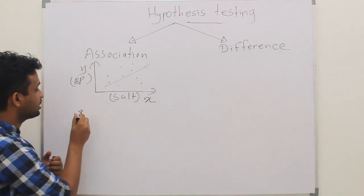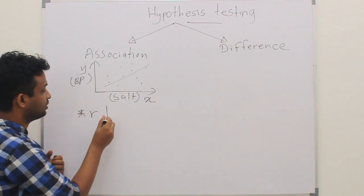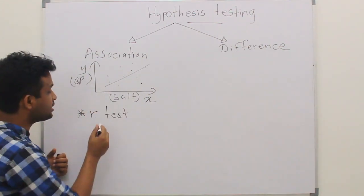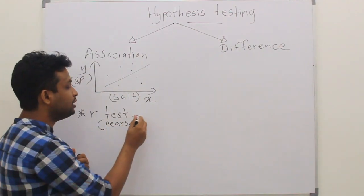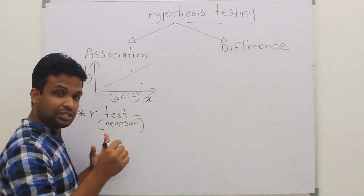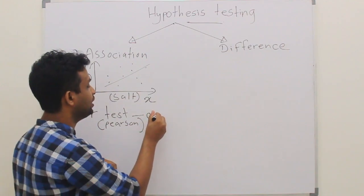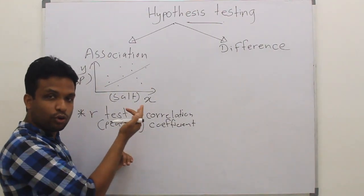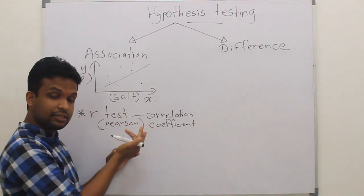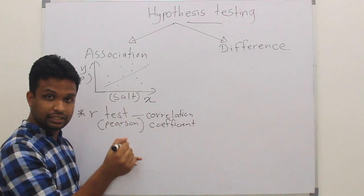What are the statistical tests that we can use to test the associations? One is R test. We call this Pearson R. We call this, in broad term, correlation coefficient. We will discuss about correlation coefficient or R test in detail in another lecture.